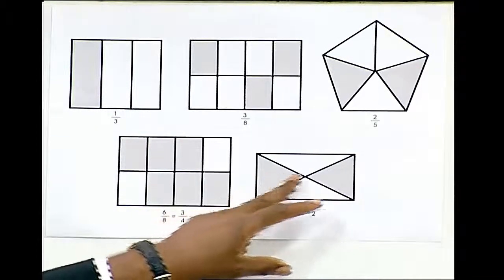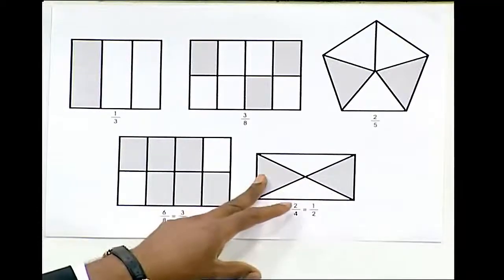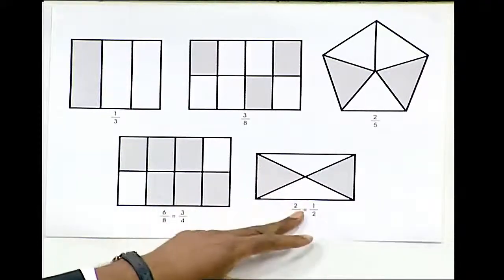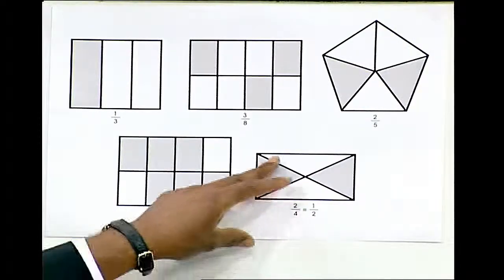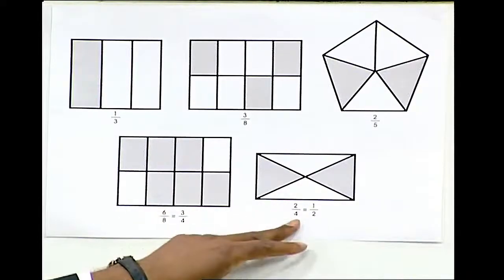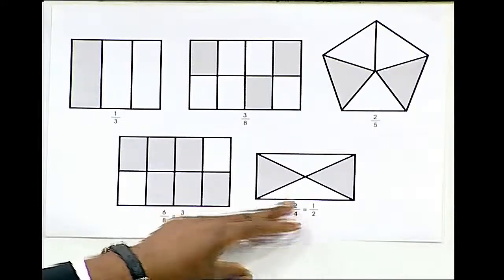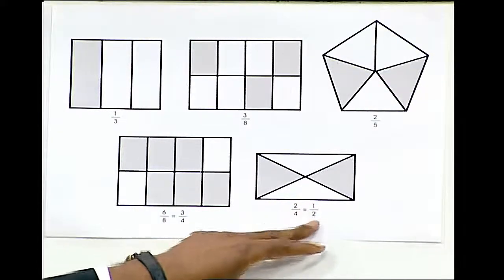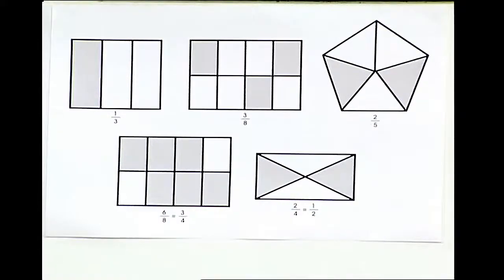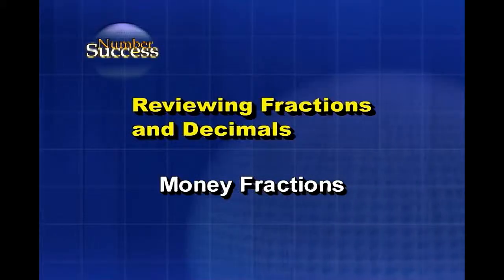This diagram shows 2 parts out of 4 parts which are shaded, which is equivalent to 2/4. 2/4 is equal to 1/2. Money fractions.